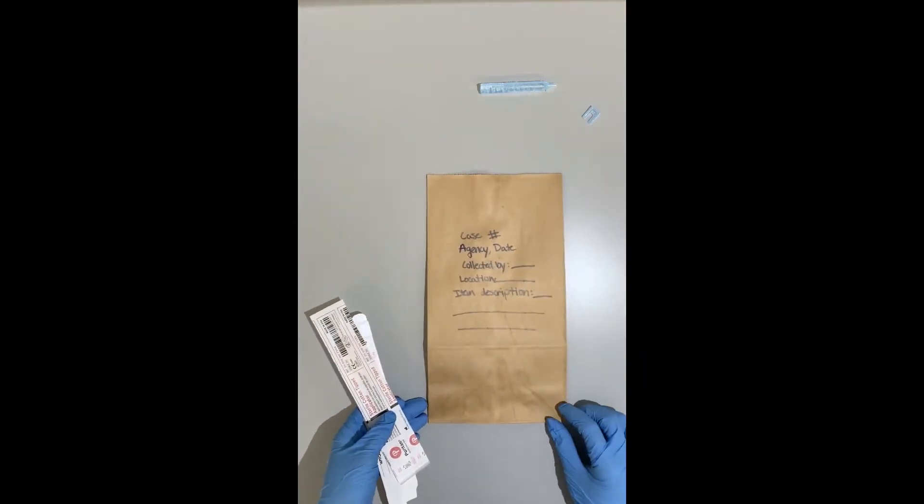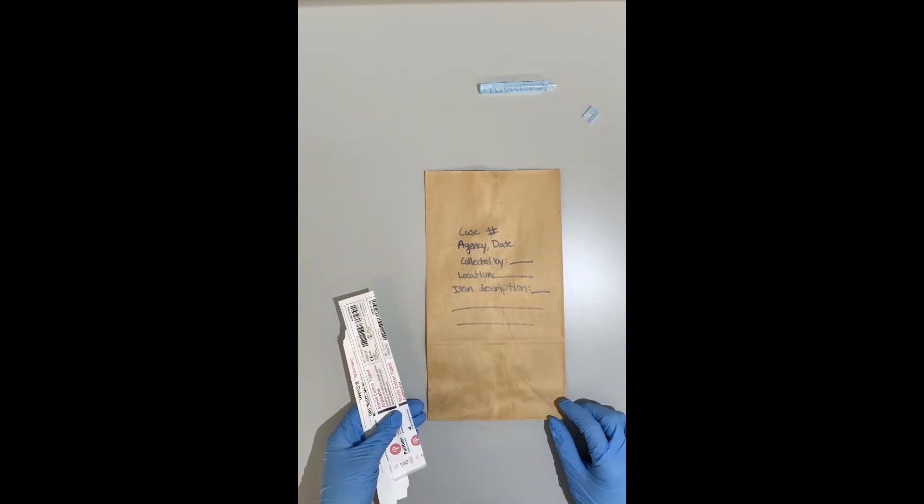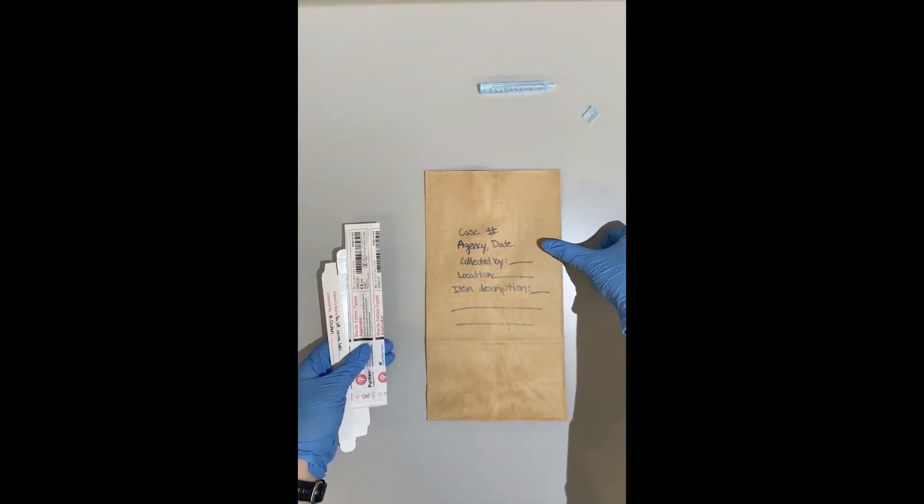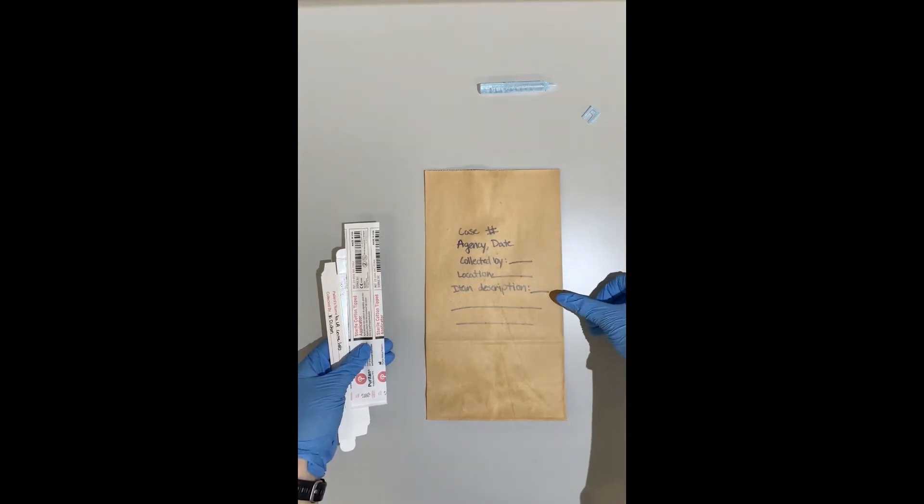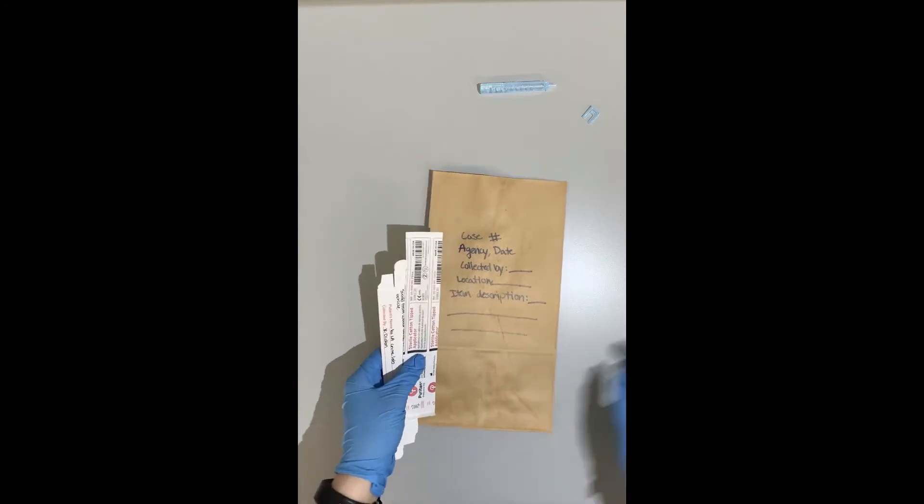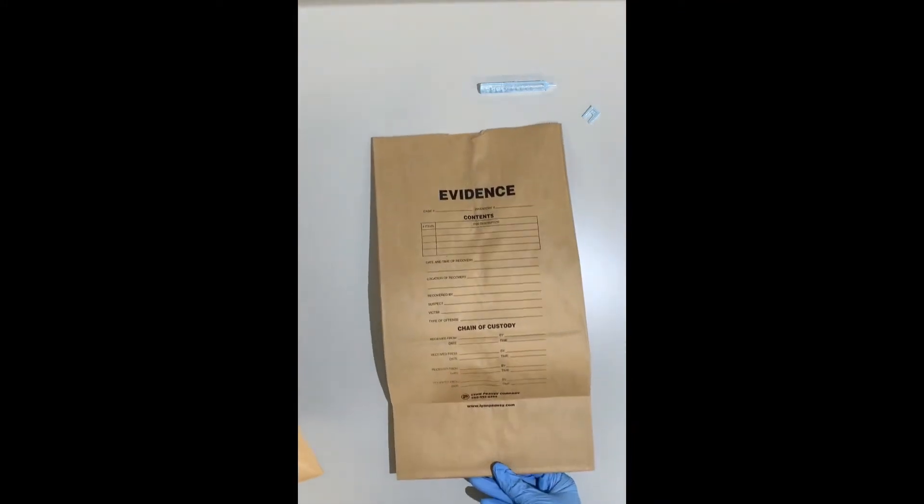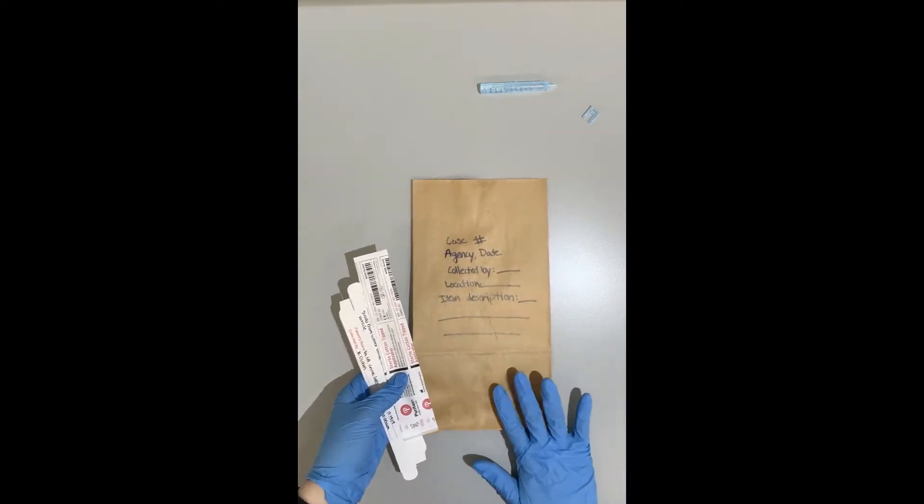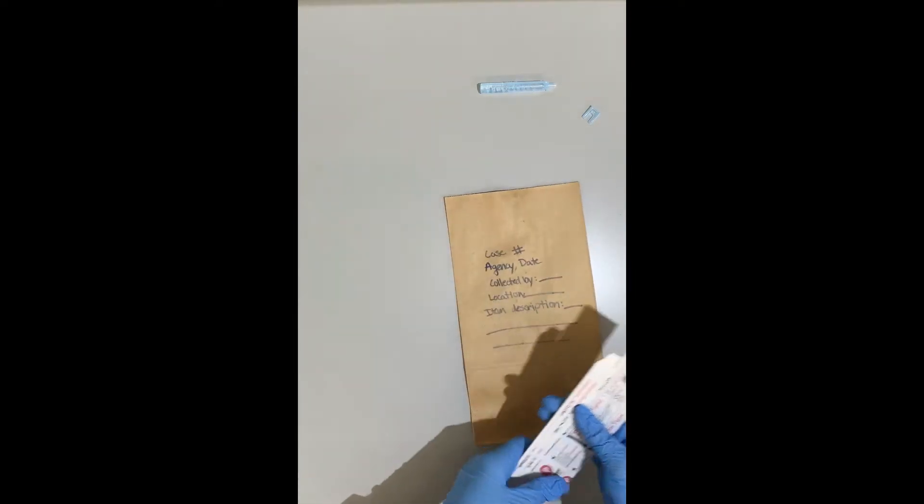I also need an evidence collection bag. I'm going to use a paper bag. You could also use an envelope and just ensure that you have your agency case number, agency name and date, who collected it, location of the evidence, and an item description. They also do make these pre-printed bags that you can use as well. We just want to make sure that you have the minimum amount of information on your evidence bags at the very least.